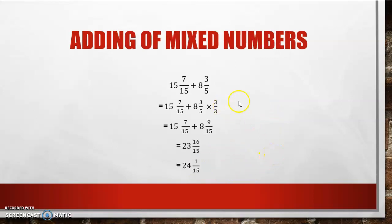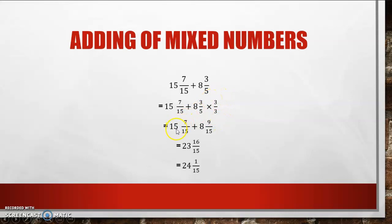Now, if I add mixed numbers, it's important to also add the whole numbers. Once again, find the lowest common multiple. This is quite an easy one because 5 is a factor of 15, so I can only multiply 5 with 3 to get to 15. And once again, I must write 3 over 3 to make it a whole. Then I have 15 and 7/15 plus 8 and 9/15.